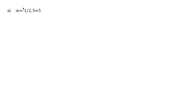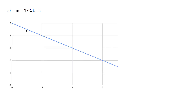For m equals negative one half and b equals 5, we have a negative fraction. You want to assume it's falling by 1 and running by 2 units, making it a relatively flat equation. As you can see, it falls by 1 unit and runs by 2 units. Our equation is y equals negative one half x plus 5.